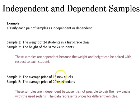But down here where we're looking at the average price of 15 new trucks versus 20 used sedans, those are independent, those are not depending on each other.